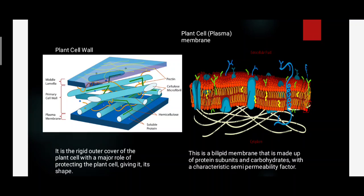As you have seen in the first figure, the cell wall is the outer covering of the cell, and it is made by different layers: middle lamella, primary cell wall, and plasma membrane. It contains different cellulose microfibrils, soluble proteins, hemicellulose, and pectins. This is the structure of the plant cell wall, whose functions are to protect the cell and give shape to the cells.